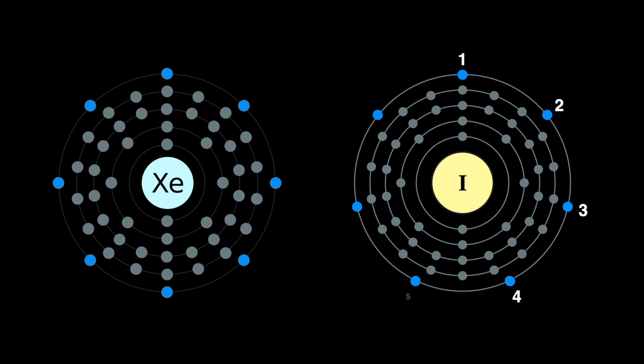with one, two, three, four, five, six, seven outer electrons will do almost anything to steal or borrow an electron to complete its outer shell to look like xenon with eight electrons.